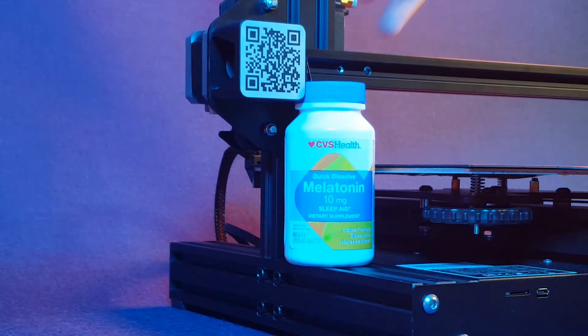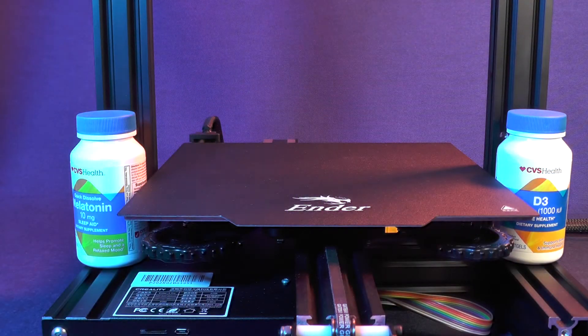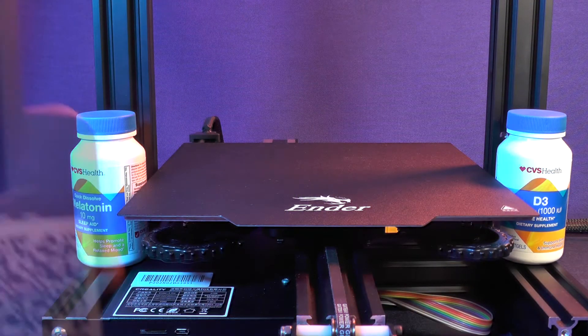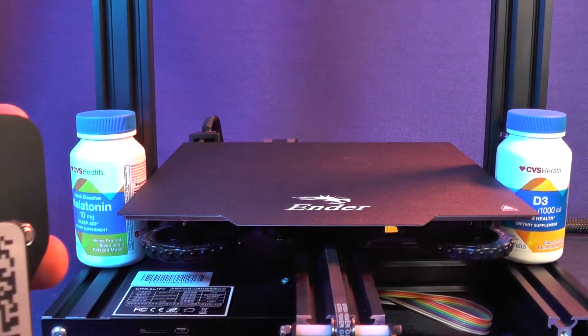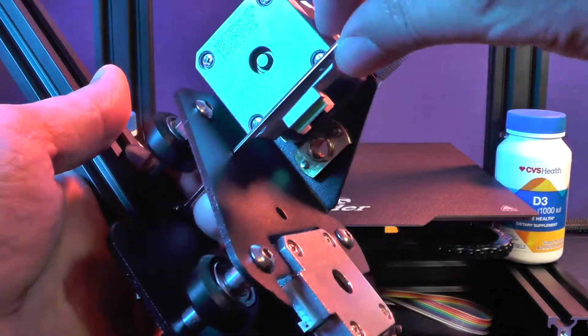Then carefully remove the extruder assembly, while making sure that you are not going to alter the position of the aluminum extrusion in relation to the extruder assembly. Now, it's time to tighten both screws.